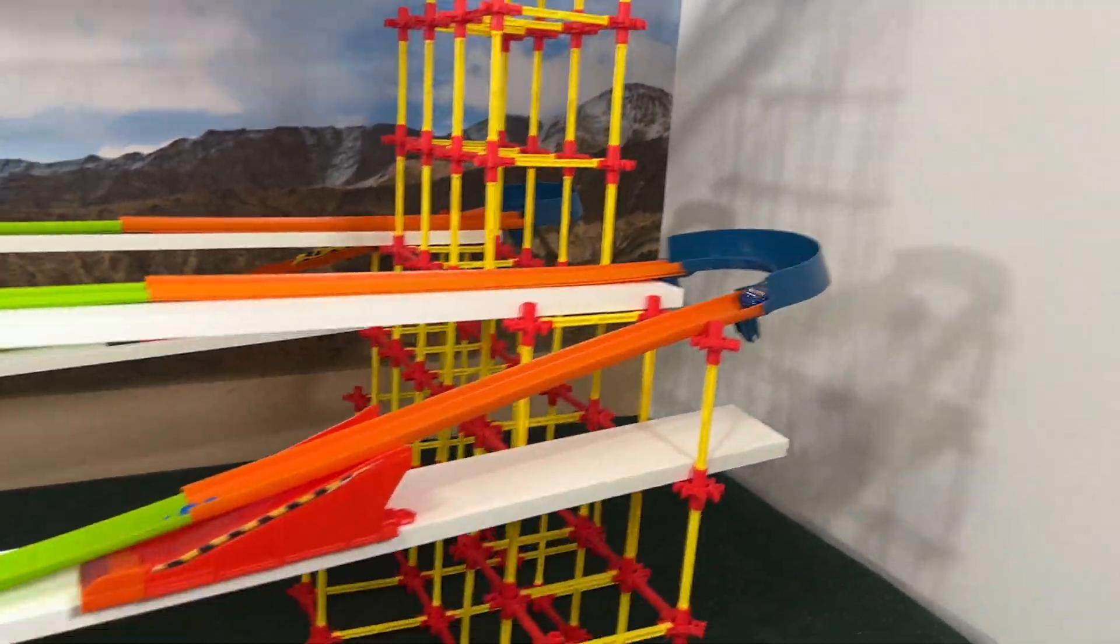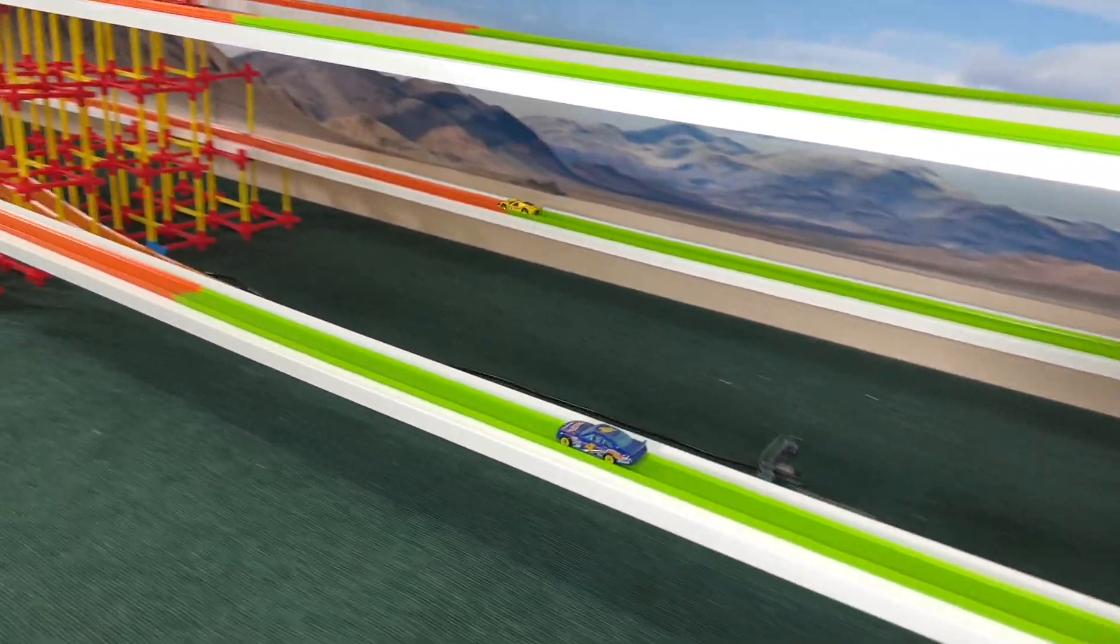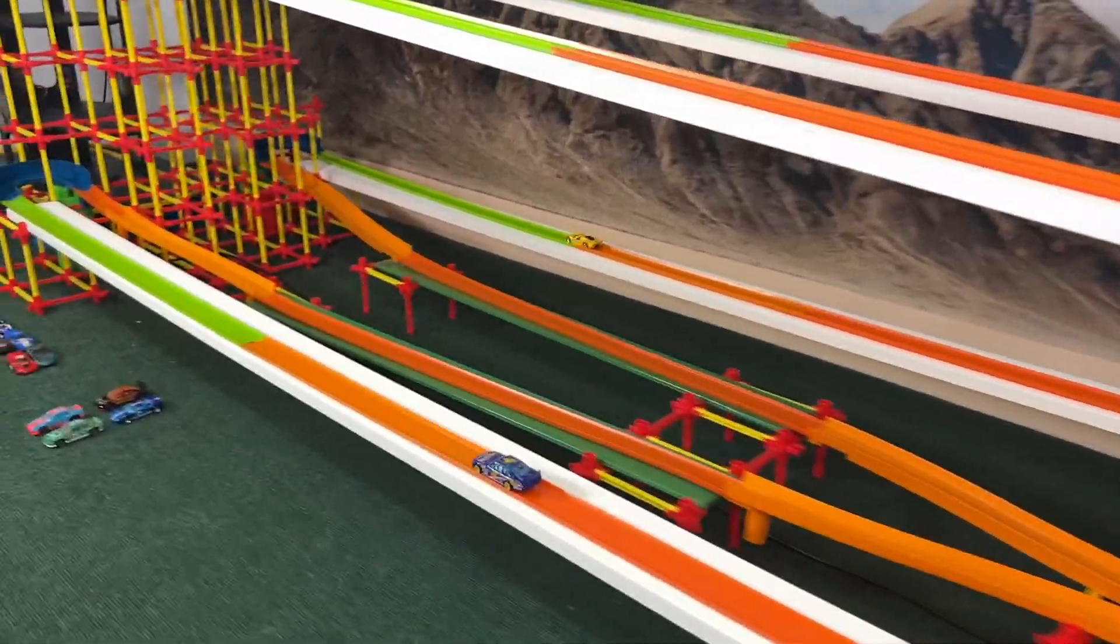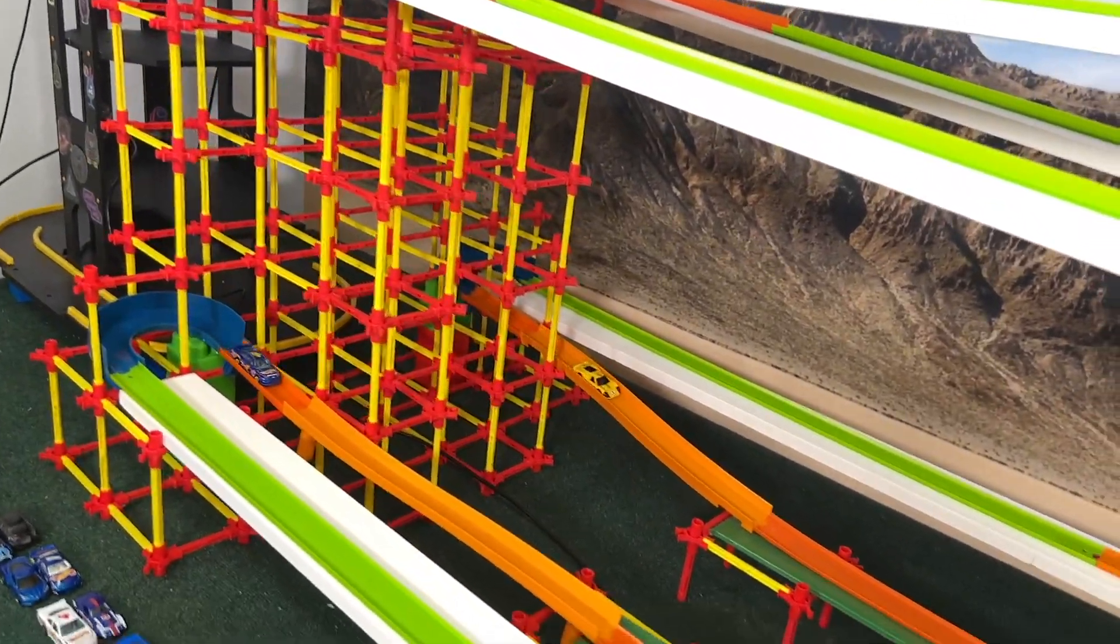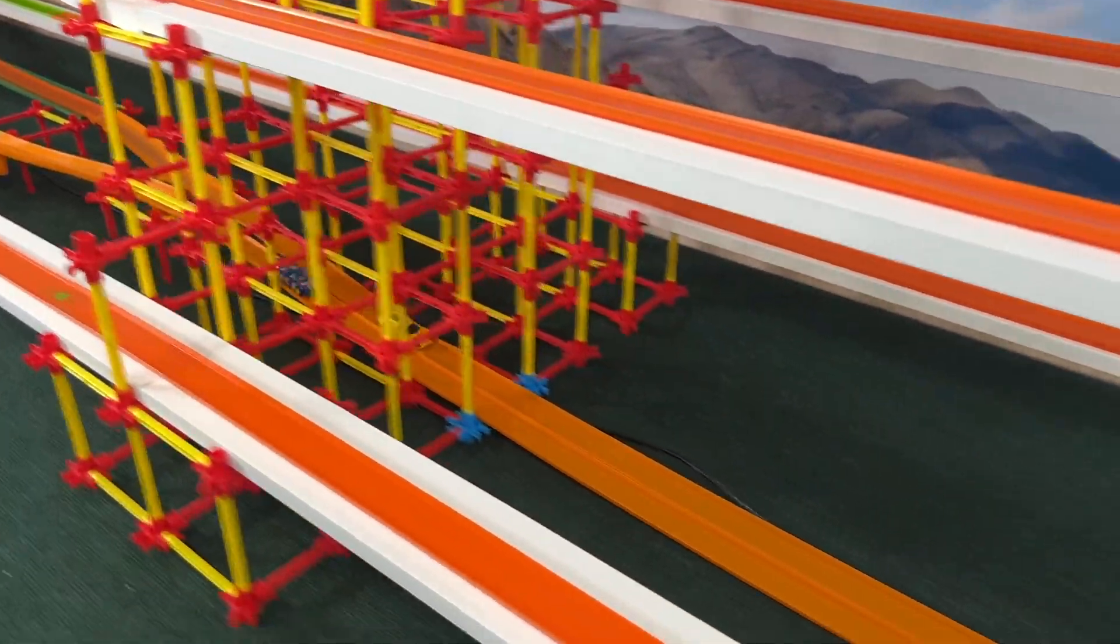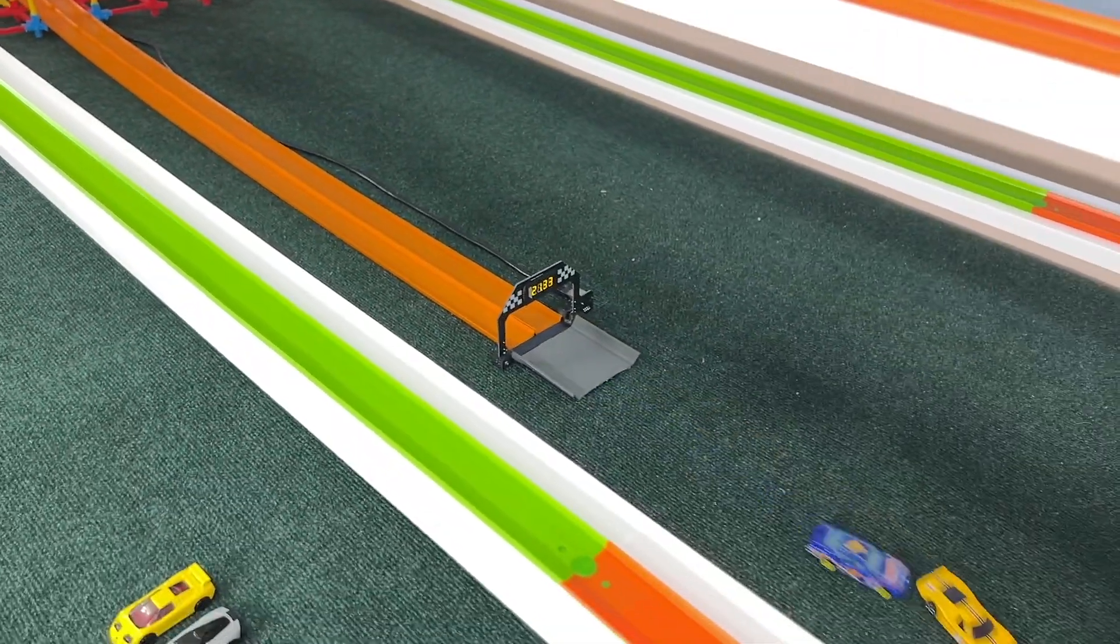GT40 again, and the Impala. Impala falling back. This might be a good win for the all-American team or their first win, which they could use. It's close here to the end though. Impala starts to speed up. GT40 barely holding on, but holds on. 21.33.